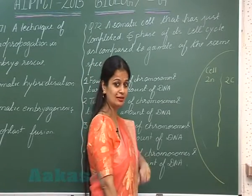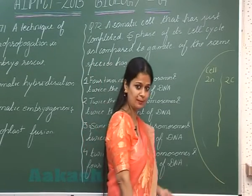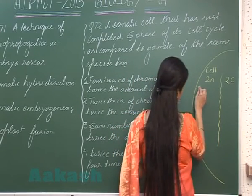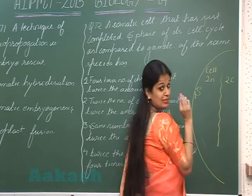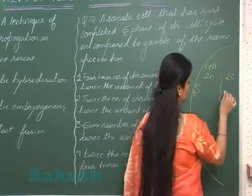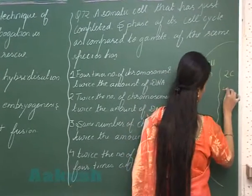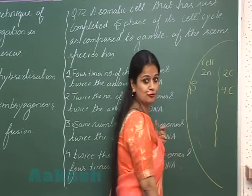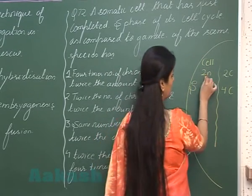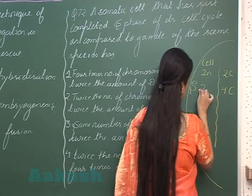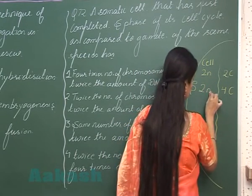During the S phase, DNA replication occurs, so the DNA content gets doubled. During S phase, DNA content becomes double — from 2C it changes to 4C. But the number of chromosomes remains the same; the ploidy stays at 2N.